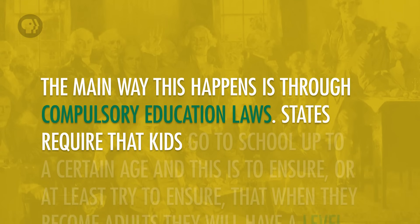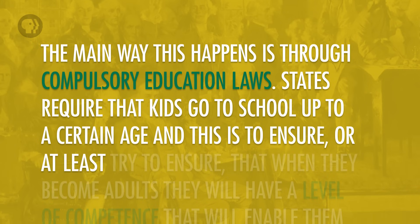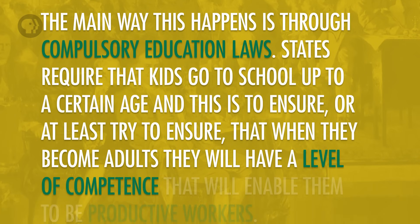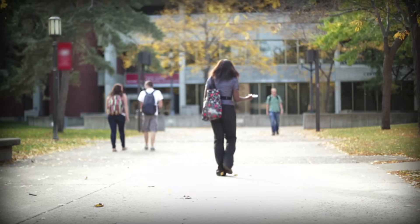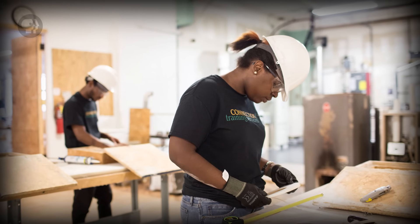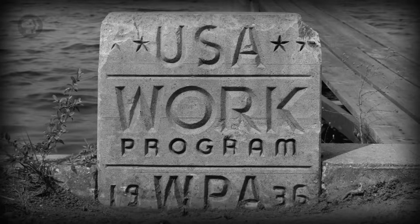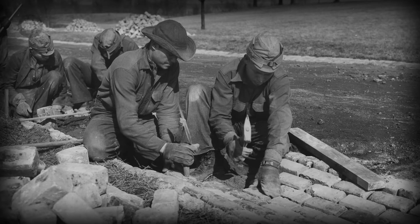You might have heard that the government is not a job creator, and in some ways that's true, except for government jobs like firefighters and public school teachers, and at the federal level, soldiers and sailors. There are other ways that government efforts help create the labor force. The main way is through compulsory education laws — states require that kids go to school up to a certain age to ensure they'll have the competence to be productive workers. The government also helps create the workforce by providing student loans to help people pay for college, as well as government-run training programs, and historically programs like the Works Progress Administration and the Civilian Conservation Corps during the Great Depression.